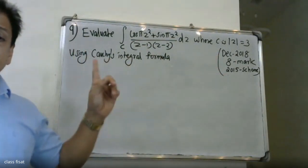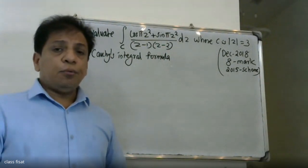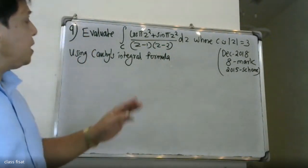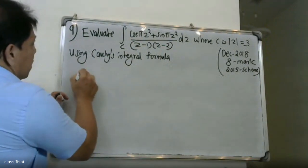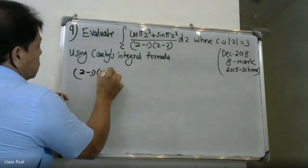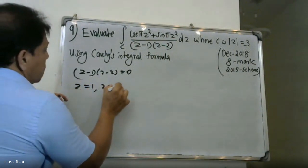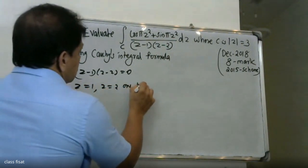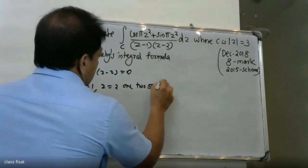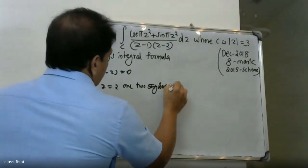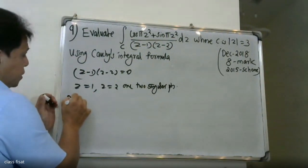Let us find the singular points. Setting (z-1)(z-2) = 0 gives z = 1 and z = 2. These are the two singular points.